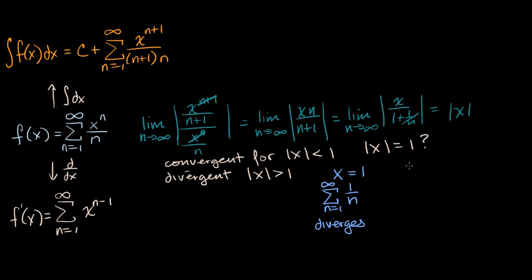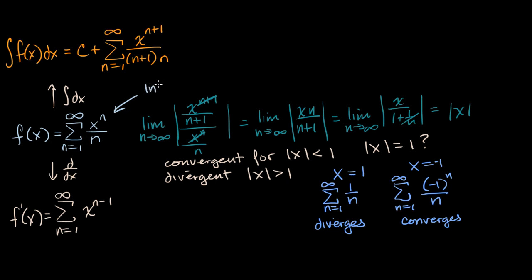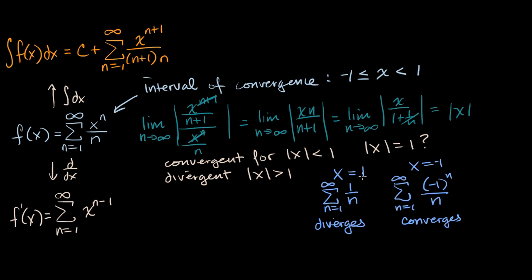This is the harmonic series, or the p series where p is one, and we've seen in multiple videos that this diverges. So when x equals one, we diverge. But what about when x equals negative one? When x equals negative one, this becomes the sum from n equals one to infinity of negative one to the n over n. This is often known as the alternating harmonic series, and by the alternating series test, this one actually converges. So the interval of convergence for our original series is negative one less than or equal to x, and x has to be less than one — because right at one we diverge.